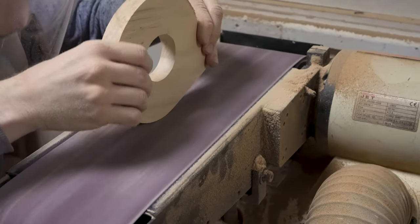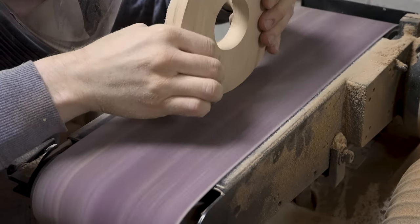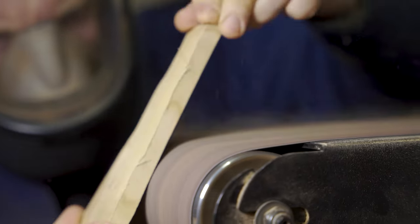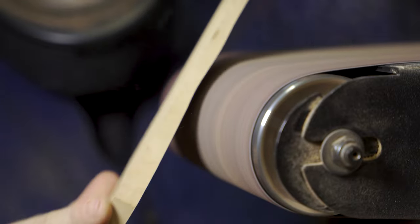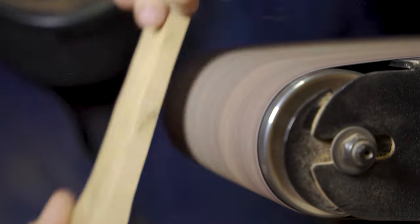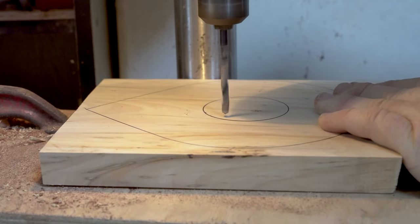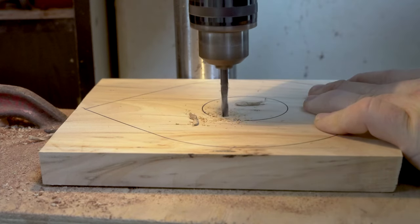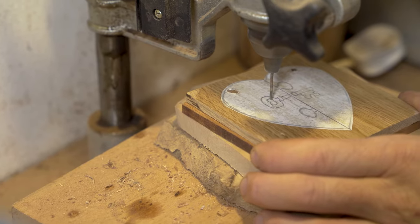What I would say when it comes to a belt sander is you can get away with having an entry level machine, quite a basic machine. You'll see us normally demonstrating with a more industrial stronger machine, and our pillar drill is a better quality pillar drill, but once again you can get away with having a more entry level hand drill when it comes to doing your pierce work.